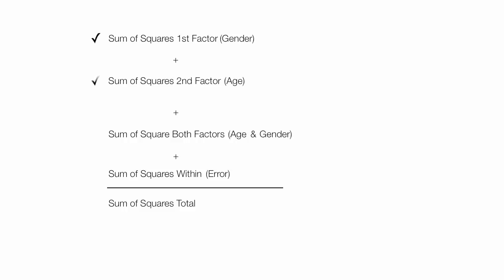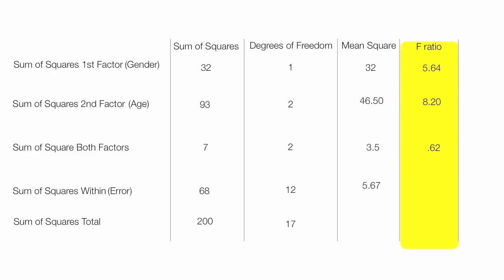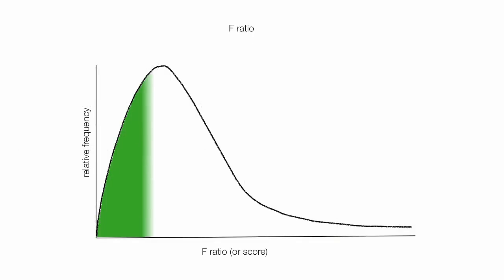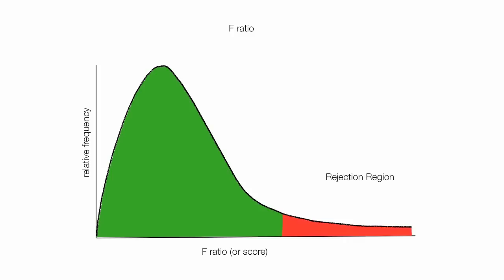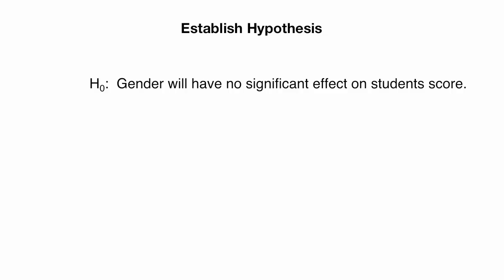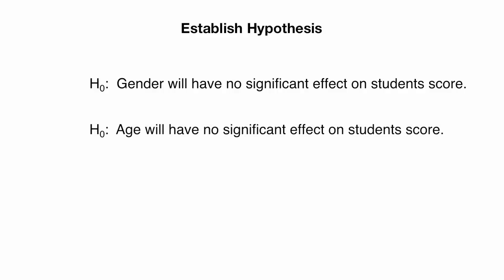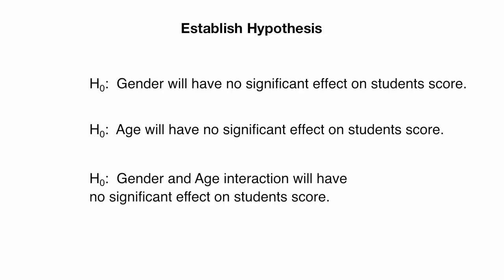In the next video, I'm going to show you how to make all these calculations by hand. In subsequent videos, I'll show you how to calculate the F-ratio and degrees of freedom, and also how to interpret the results and come up with a rejection region. If the F-ratio is in the red area, we reject the null hypothesis; if it's in the green area, we fail to reject. The hypotheses we'll test are: gender has no significant effect on student score, age has no significant effect on student score, and the gender-age interaction has no significant effect on student score.